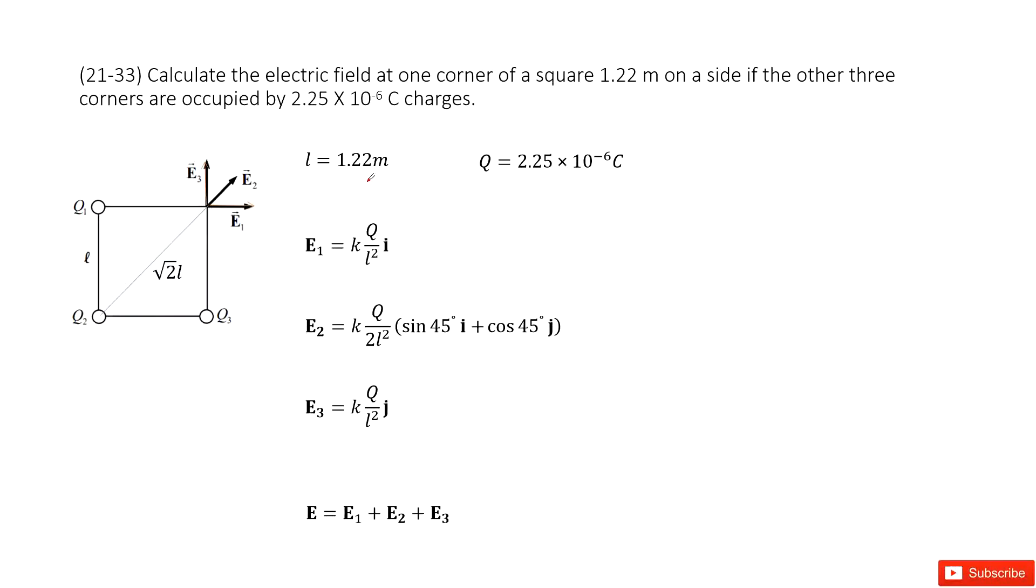Welcome to my channel, I'm Zhang Jingxu. Let's look at problem 33 in chapter 21. Chapter 21 is about electric charge and electric field. We need to determine the electric field at one corner of a square, and the side length for the square is given.